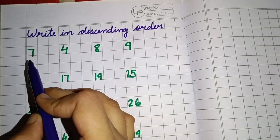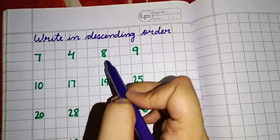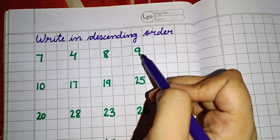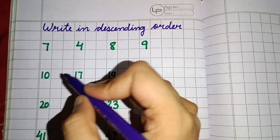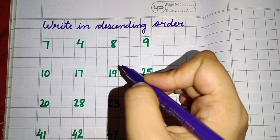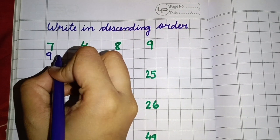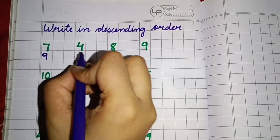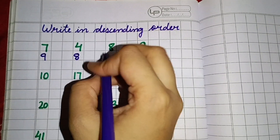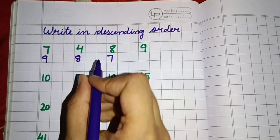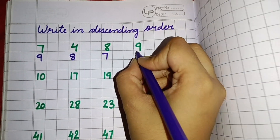Here are a few numbers: 7, 4, 8, 9. Now the biggest number among these four numbers is 9. So we will write here 9. After that we will write 8. Then 7. And the smallest number is 4, so we will write 4 at last.